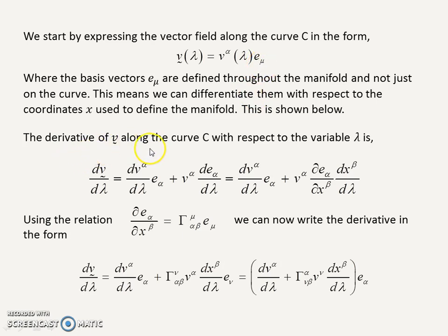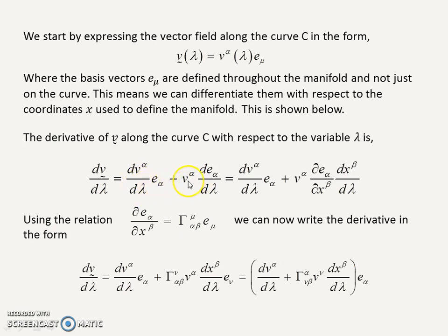The derivative of V along the curve C with respect to lambda is dV/dλ. Using the product rule, this gives dV^α/dλ times the basis vector, plus the components of the vector times the derivative of the basis vectors themselves. Because we're in curved space, these basis vectors change from point to point.